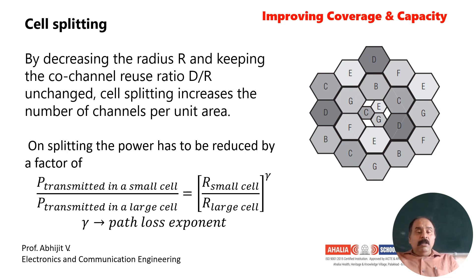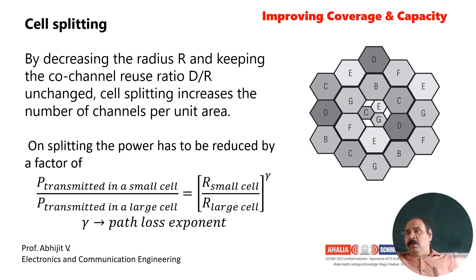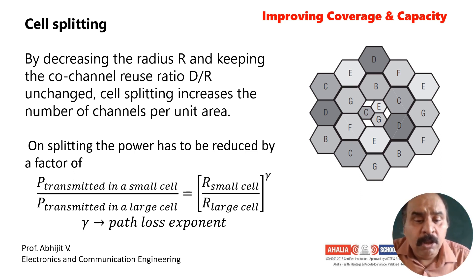On splitting, the power has to be reduced. The ratio of power transmitted in a small cell divided by power transmitted in the large cell equals the received power raised to the path loss exponent. That is, P transmitted in a small cell divided by P transmitted in a large cell equals the ratio of radii raised to the path loss exponent.